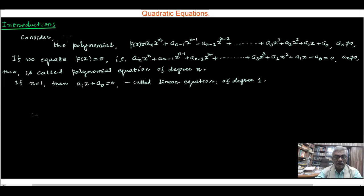Now if n = 1, then the polynomial equation is going to be a_1 x + a_0 = 0 called a linear equation of degree 1. And if n = 2, then a_2 x^2 + a_1 x + a_0 = 0 called the quadratic equation, this is of degree 2.